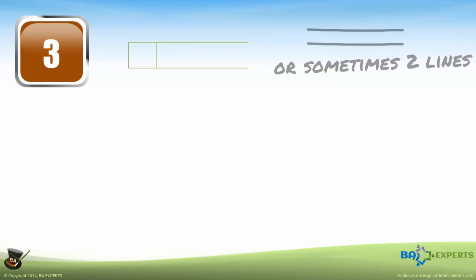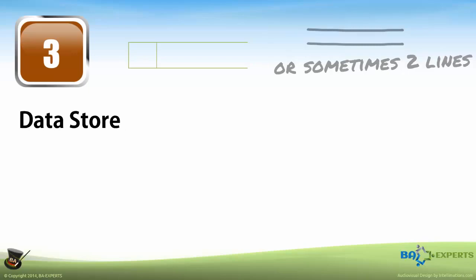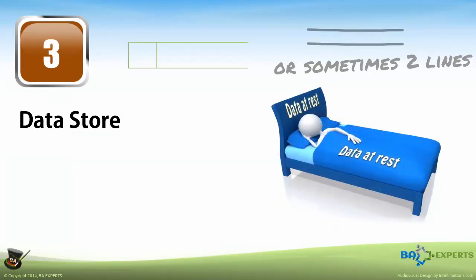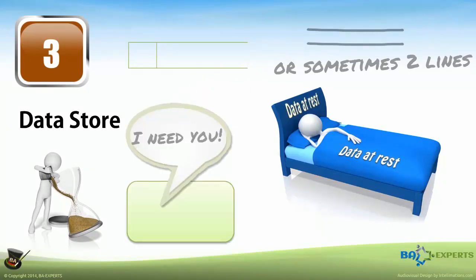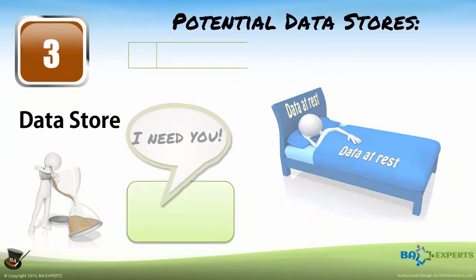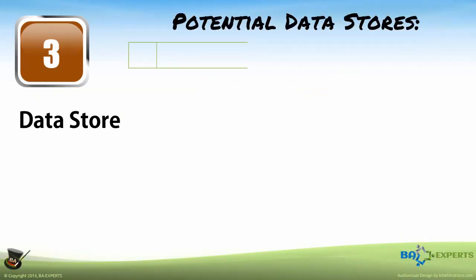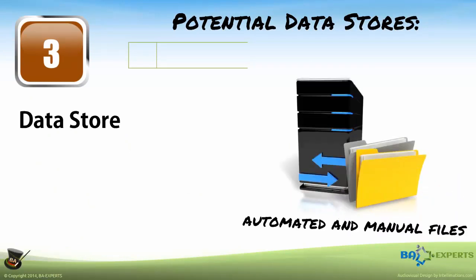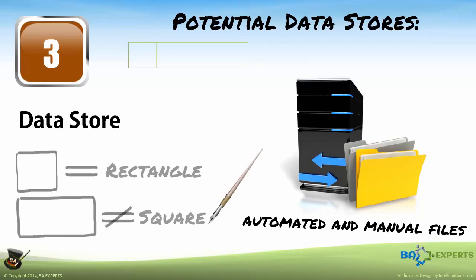A special symbol consisting of a small square with the top and bottom lines extending outward to the right represents a data store. A data store is simply data at rest — it is not going anywhere; it is simply waiting to be consumed by some process. A data store is not necessarily a file, although a file is a data store, like a square is a rectangle but a rectangle is not necessarily a square.